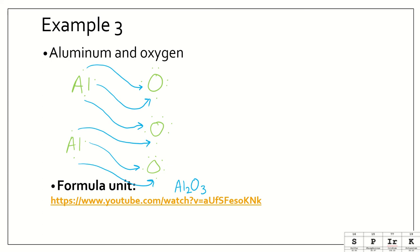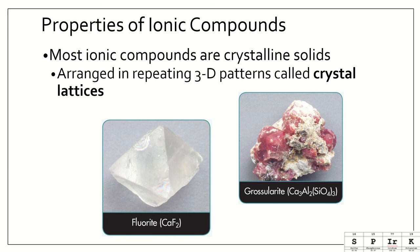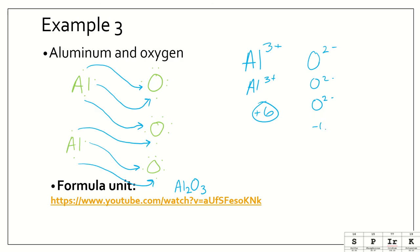And this would give us a formula unit of Al₂O₃. Another way you can look at this is aluminum is in group three and loses its three valence electrons to be three plus. Oxygen is a two negative. So what is a least common multiple of three and two? Hopefully you know that it is six. So to get both of these up to six, we would need two aluminums for an overall plus six. And we would need three oxygens or oxides to get us negative six. And again, that gives us an overall of Al₂O₃.